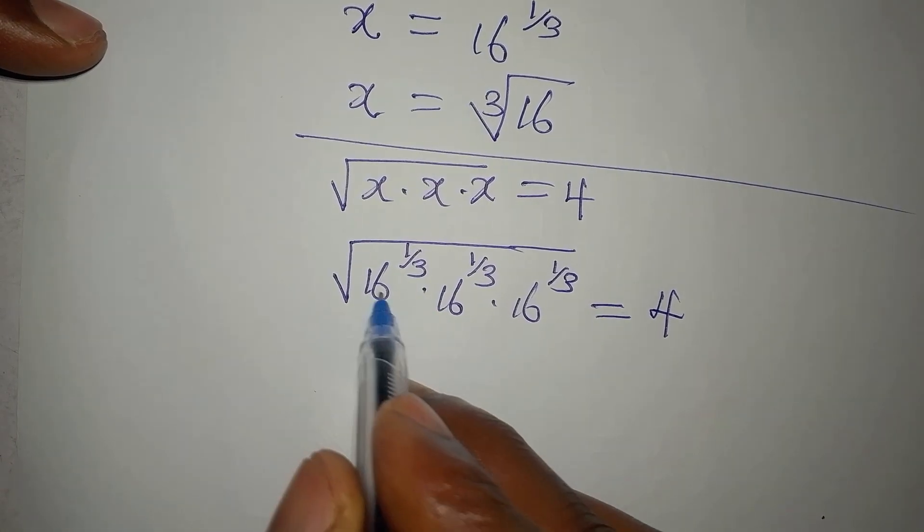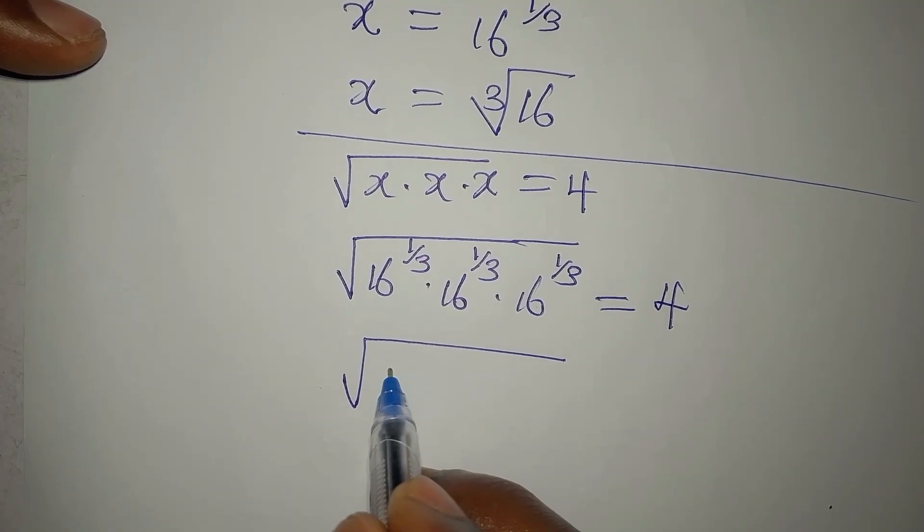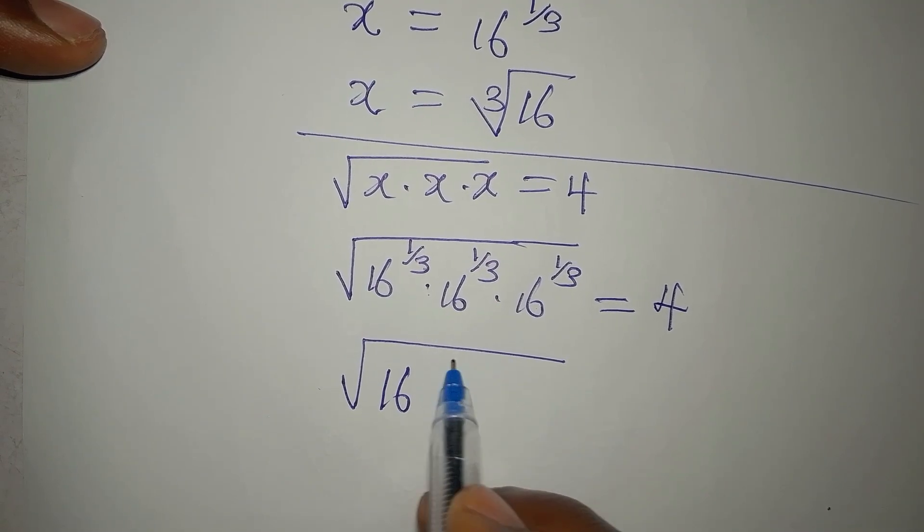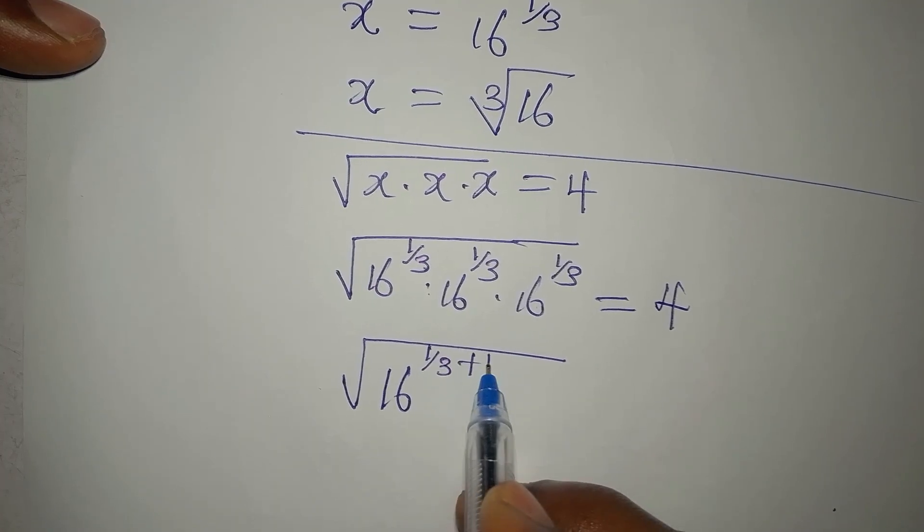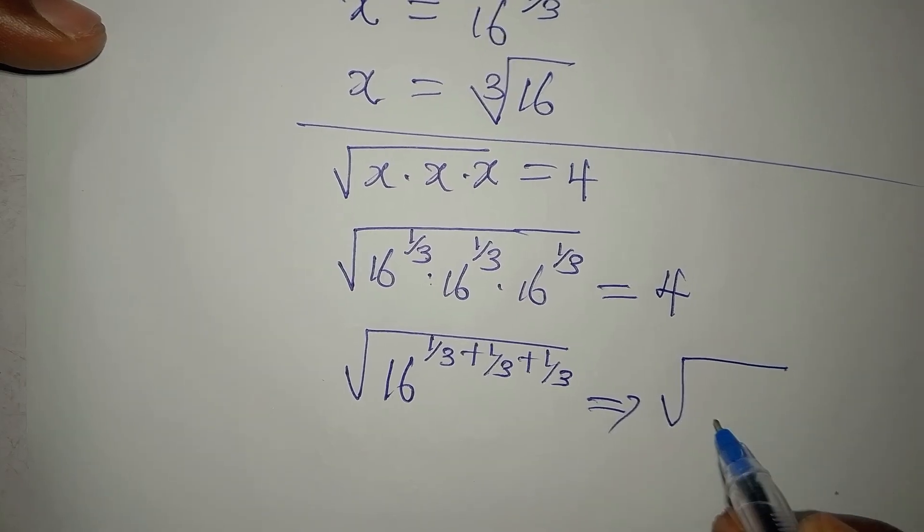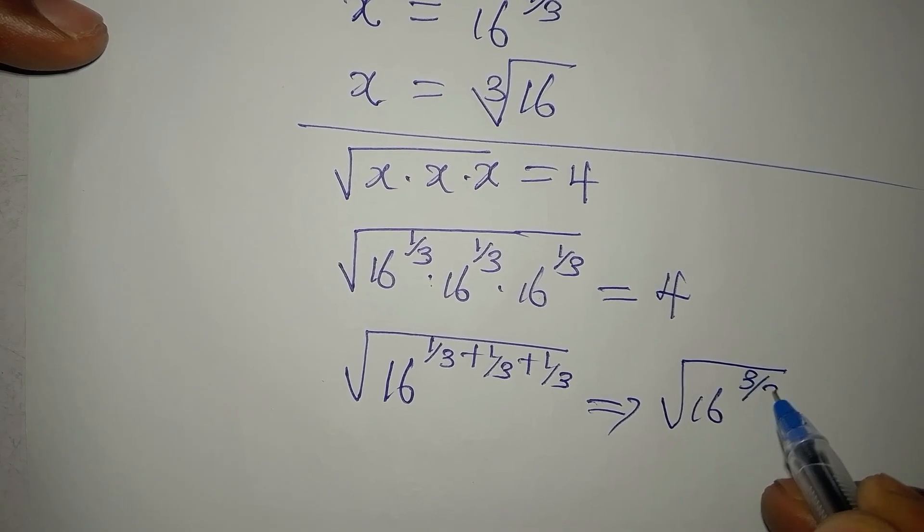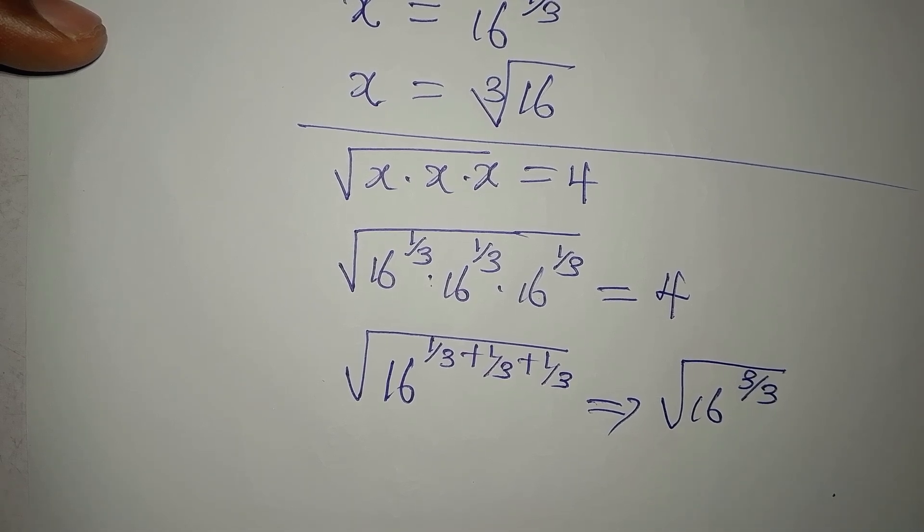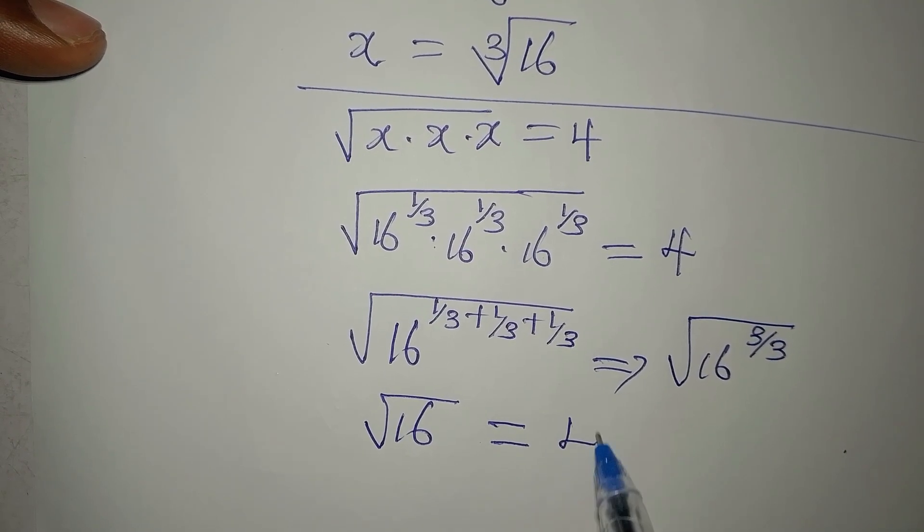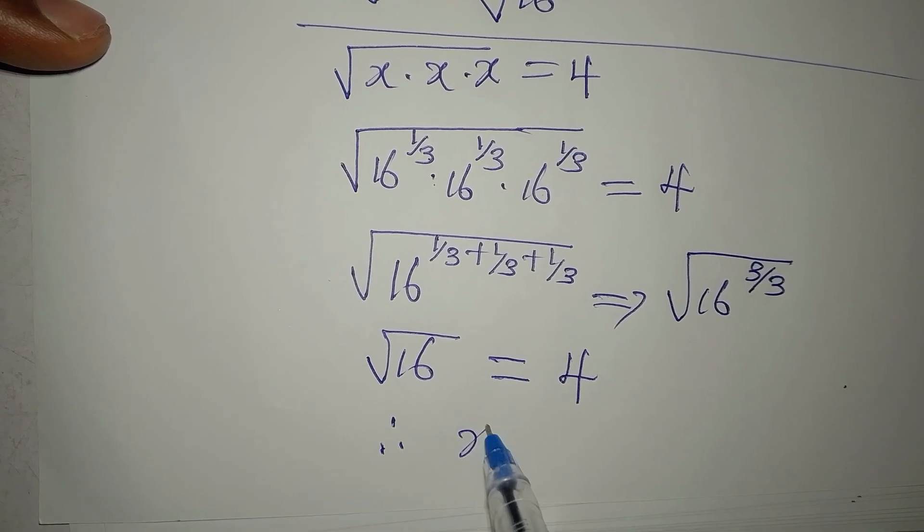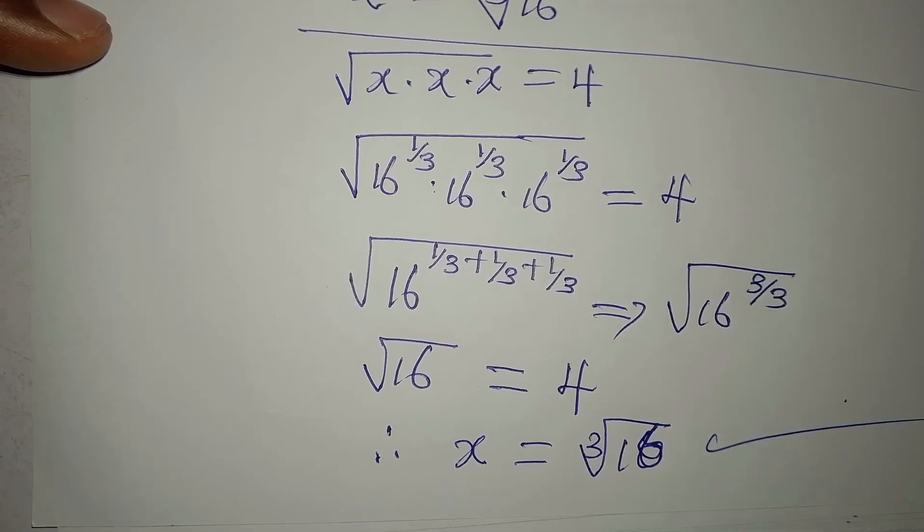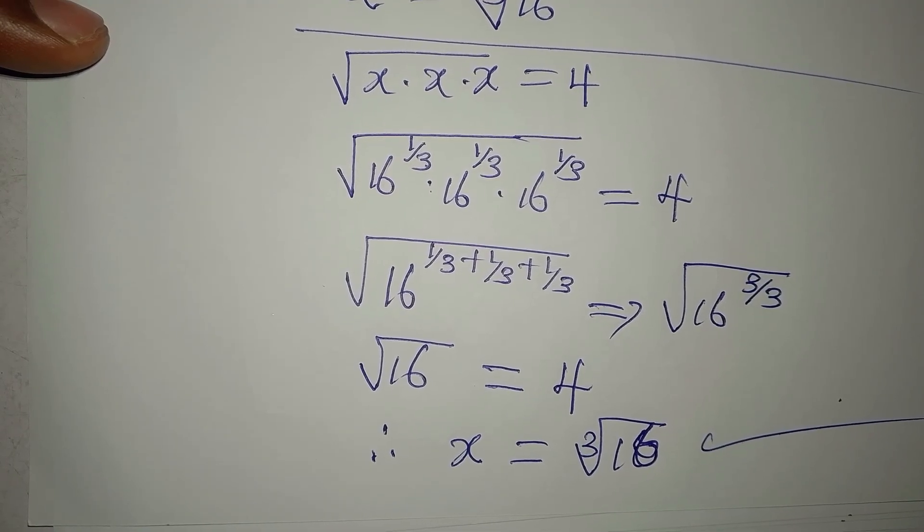Now, we are going to pick one of the bases here. We have square root of 16. Then the powers, we are going to add them because we are multiplying. So, we have 1 over 3 plus 1 over 3 plus 1 over 3. This will give us square root of 16 to the power of 3 over 3. And 3 over 3 is 1. So, this equally means that we are having square root of 16. And square root of 16 is 4. Therefore, our x equal to the cube root of 16 satisfies the equation. Thank you for watching.